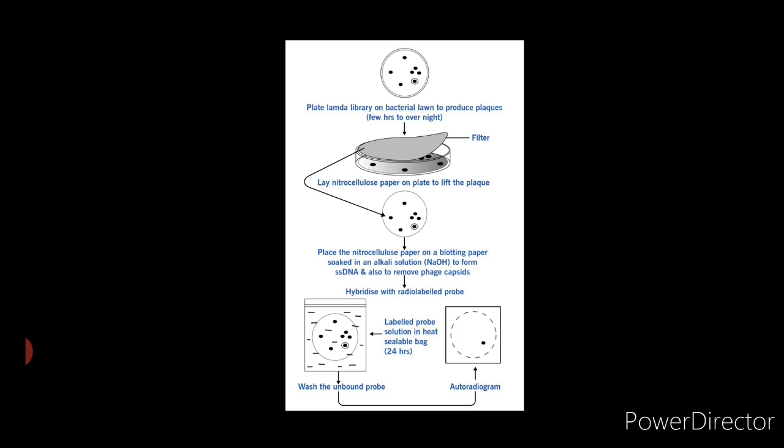Next step, place the nitrocellulose paper on a blotting paper soaked in an alkali solution, which is sodium hydroxide in this case, to form single-stranded DNA and also to remove phage capsids. Then we have to hybridize it with radiolabeled probe.